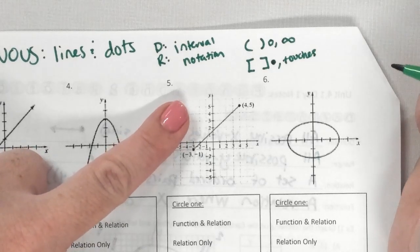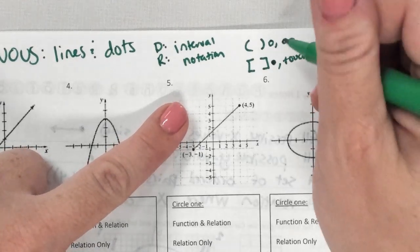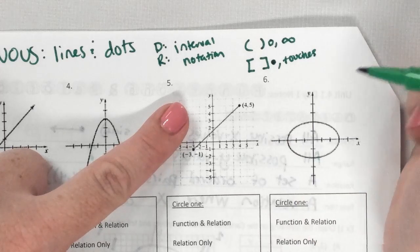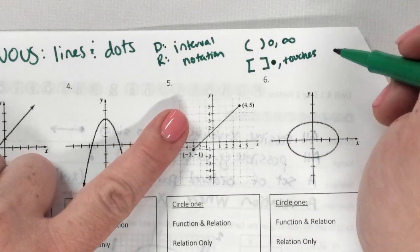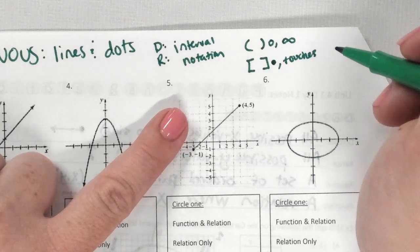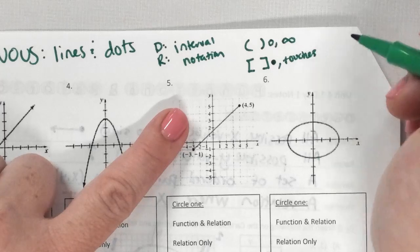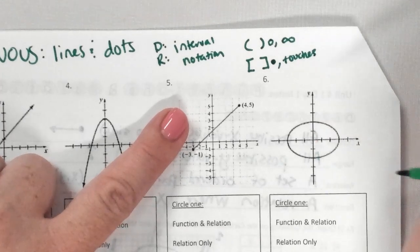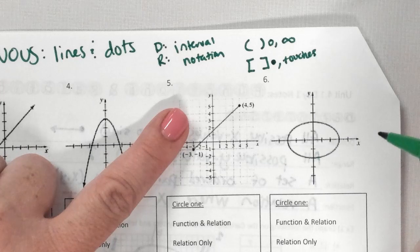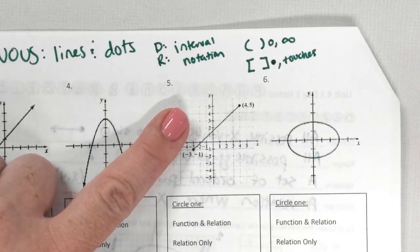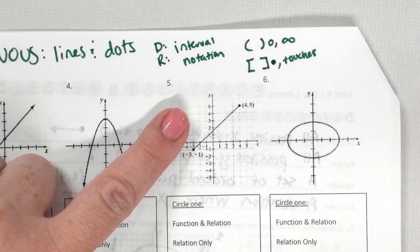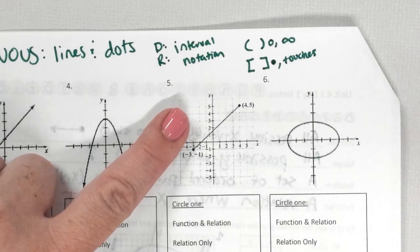Infinity is not a number — you can't touch infinity, that's why infinity always has a parenthesis. We don't use a lot of open dots, but it's like if I said less than $6 — can I have exactly $6? No, but I could have $5.99, right next to 6. A closed dot would be less than or equal to $6, because then I can have exactly $6.